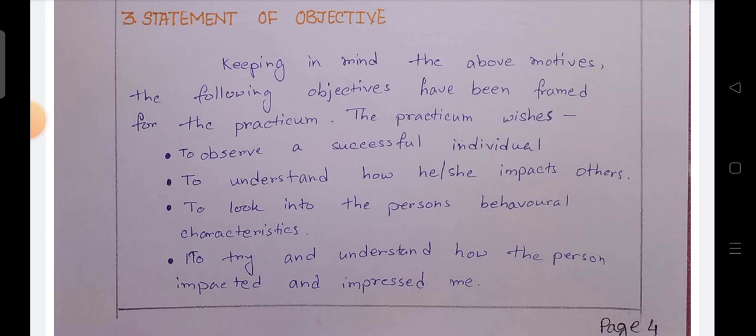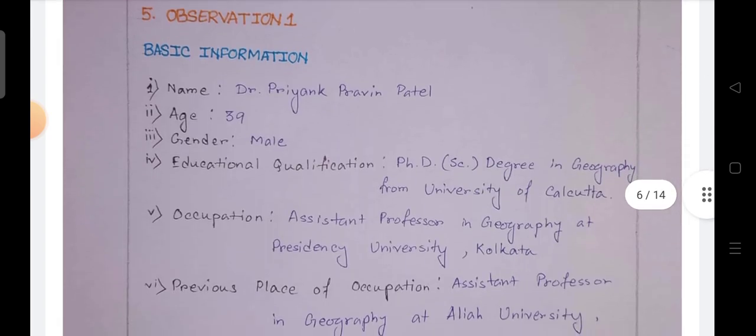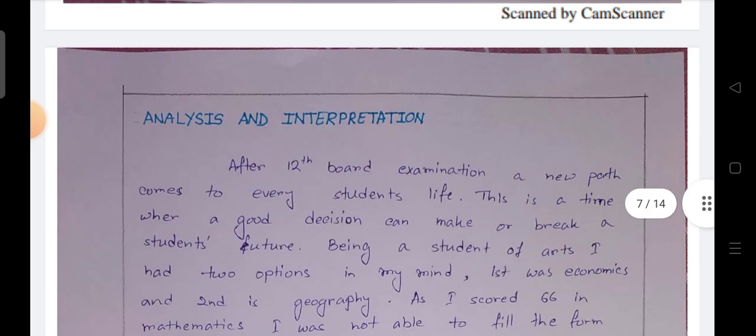Data collection: in the pandemic situation, going to individuals for a survey is not possible. The basic information were collected by telephonic communication. Observation basic information includes name, age, gender, educational qualification, occupation, previous place in occupation, analysis and interpretation.